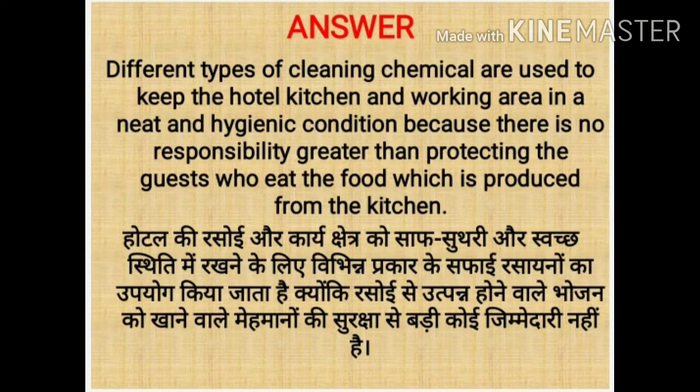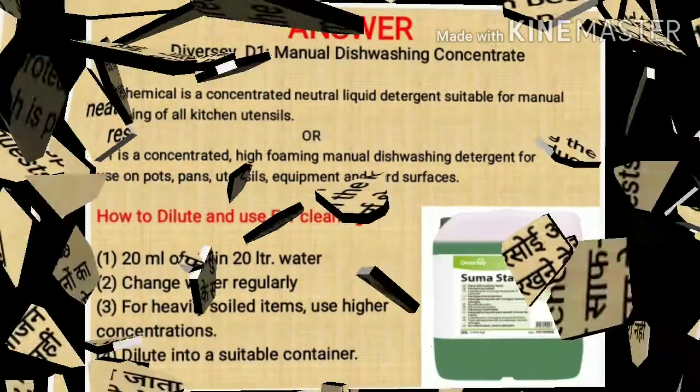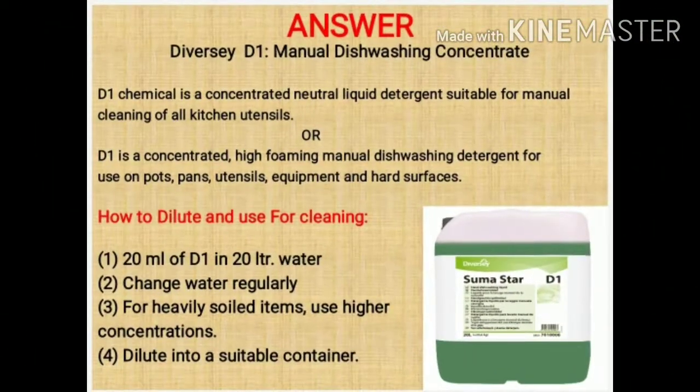Ab main aapko Hindi mein bataonga ki hum chemical kyun use karte hai kitchen mein. Hotel ki rasoi aur karya kshetra ko saab suthri aur swachh rakhne ke liye bhuvin prakar ke chemicals ka upyog kiya jata hai, kyunki rasoi mein utpann hone wale bhojan ko khane wale mehmano ki suraksha se badi koi zimmedaari nahi hai. Ab main aapko diversity ke chemicals ke baare mein knowledge doonga, jismein sabse pehle aata hai D1.